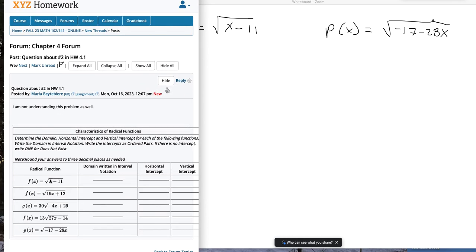Okay, so I'll do a couple of these. For this question, we're given a radical function, and we're asked to find the domain, horizontal intercept, and vertical intercept.